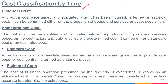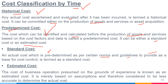Classification by time: historical cost is cost already incurred and then evaluated — committed either on production of goods or asset acquisition. Pre-determined cost is identified and calculated before the production of goods and services, and can be either standard or estimated. Standard cost is fixed after following proper norms and guidelines — a standard is set indicating what the cost should be; if any department exceeds it, that is an abnormal deviation that must be analyzed. Estimated cost is a pre-determined cost not based on strict controlled norms and guidelines.